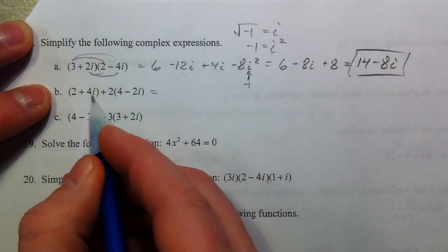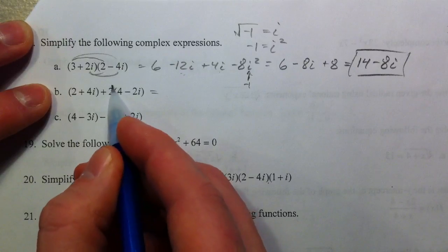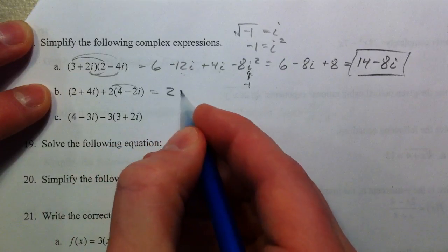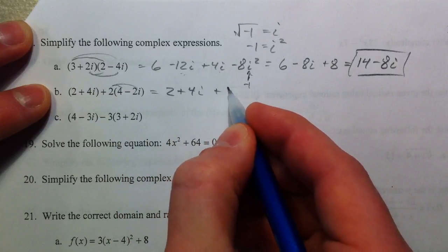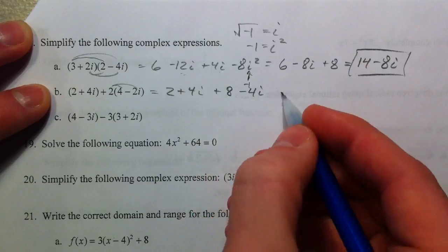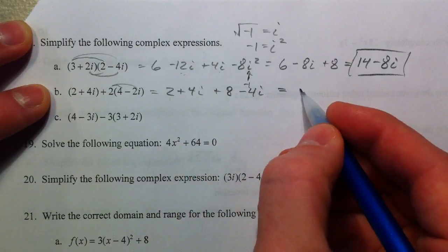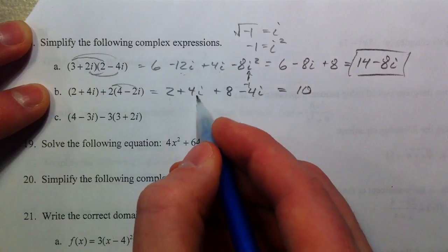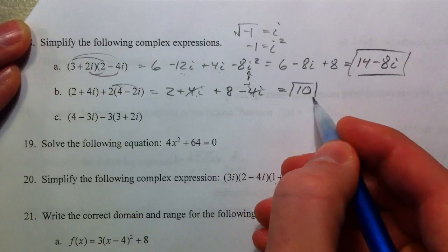This next one, you've got 2 plus 4i, and then this scalar is what we call it, but we're multiplying just this first one, and so let's distribute that. 2 plus 4i, and then plus 8 minus 4i. This one's a little simpler because you just have to combine your like terms now. 2 plus 8 is 10. And then 4i minus 4i is 0, so your answer's just 10.